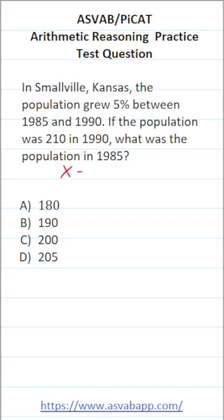So I'm going to let the letter variable X be the population of Smallville in 1985. And with that in mind, we're going to take these statements and translate them into an equation that we'll then solve.